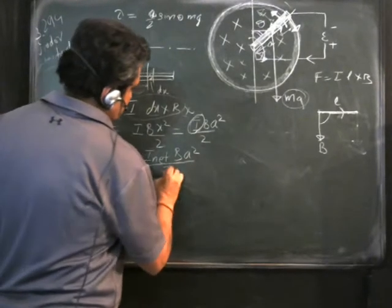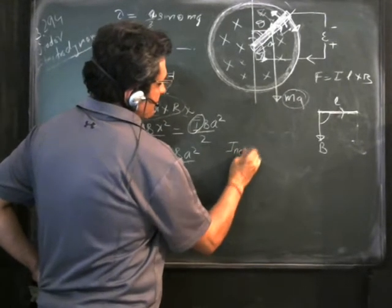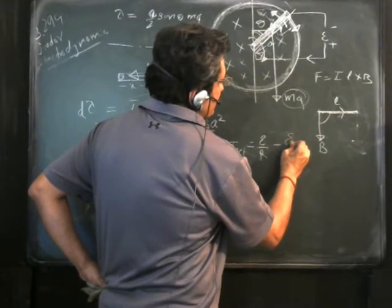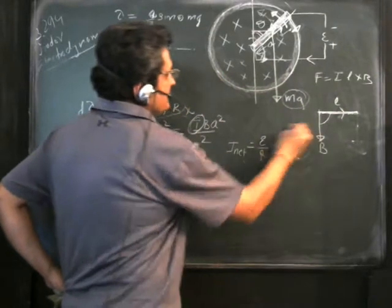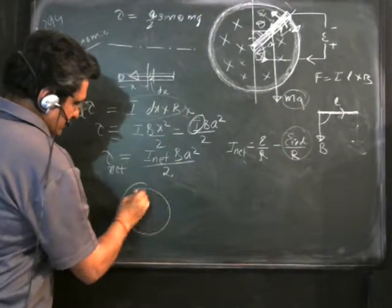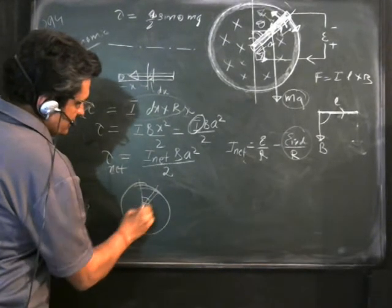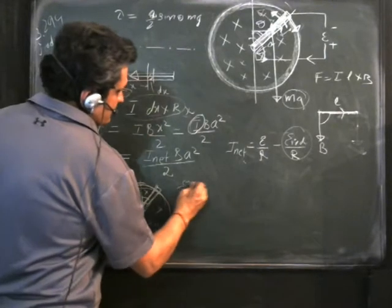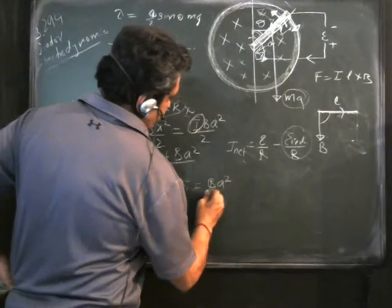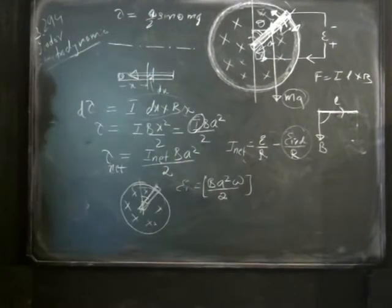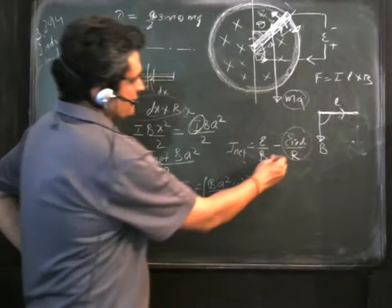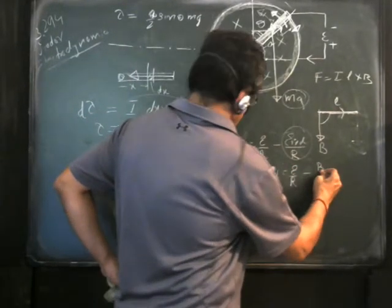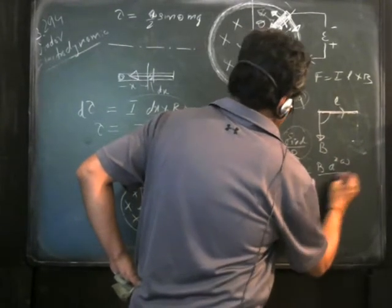For the net torque due to the EMF and the induced EMF, we use I_net = E/R minus the induced EMF divided by R. When a conductor rotates in a circle in a magnetic field directed downward, the standard result for the induced EMF is B·a²·ω/2. So I_net = E/R − B·a²·ω/(2R).